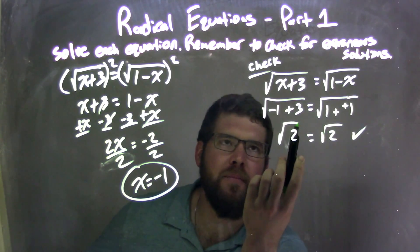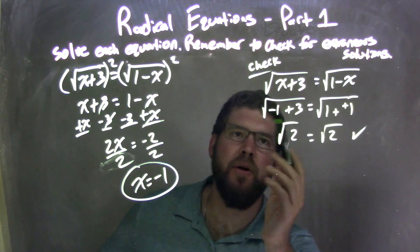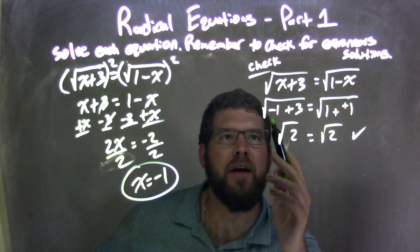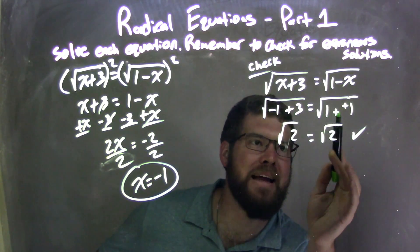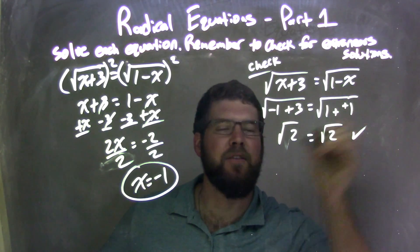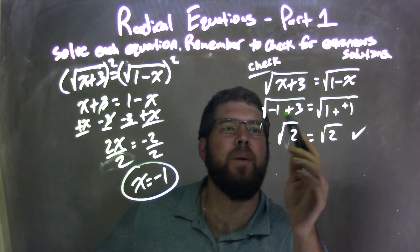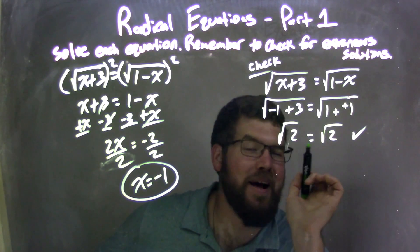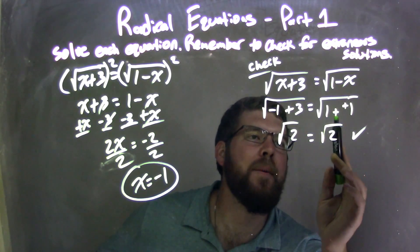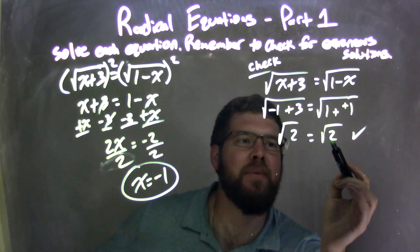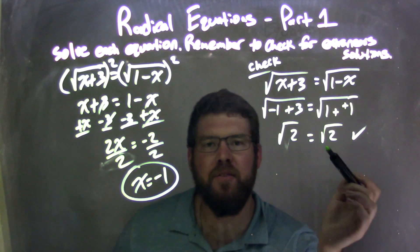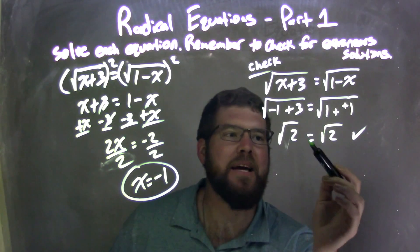I then took my original equation, rewrote it, and then substituted negative 1 in for both x's. I had negative 1 plus 3 here inside the square root. And then the square root of 1 minus, be careful, minus a negative 1. So negative 1 plus 3 comes out to be a positive 2, not negative. And 1 minus a negative 1 is the same thing as 1 plus a positive 1, which gave me a 2 here inside the square root. So my left and right are equal. Square root of 2 equals square root of 2.